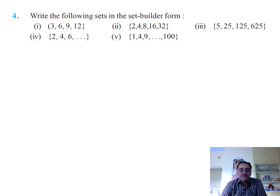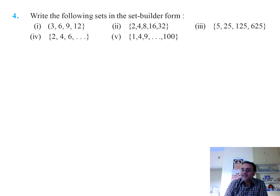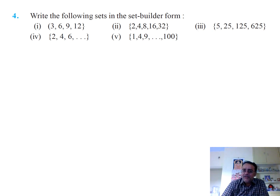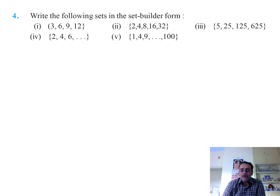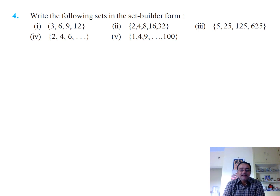The next set is {2, 4, 8, 16, 32} — these are all powers of 2: 2¹, 2², 2³, 2⁴, 2⁵. We write this as {x : x = 2ⁿ, where n is a natural number and n ≤ 5}. The third bit is {5, 25, ...} — powers of 5, written as {x : x = 5ⁿ, n ∈ ℕ, n ≤ 4}. The fourth bit {2, 4, 6, ...} represents all even numbers, written as {x : x = 2n, n ∈ ℕ}.